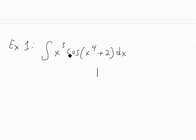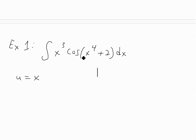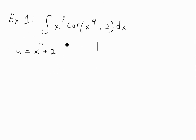In this case, there's an inner function x to the 4 plus 2. This is pretty much a guessing game — I would assume you'd pick the substitution u equals x to the 4 plus 2, just because it's inside another function, which is cosine. You might not always get the right guess, but you can go over it again, and it's pretty straightforward usually.